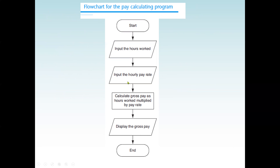For example, to write a program that calculates the gross salary of an employee: we start with an oval, then input the hours worked, then input the hourly rate. If we know those two values, we calculate gross pay as hours worked multiplied by pay rate. Then we display the results. The parallelogram is input or output, the rectangle is processing, and we always end with an oval.